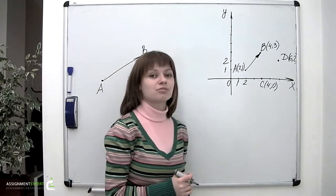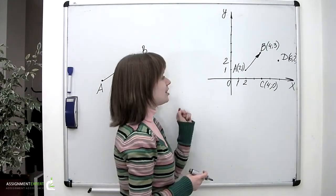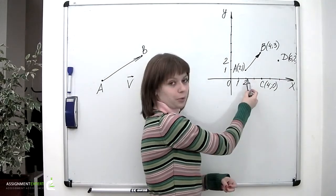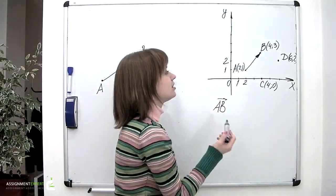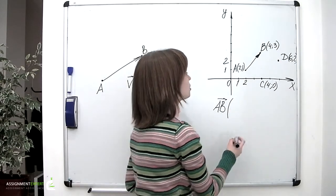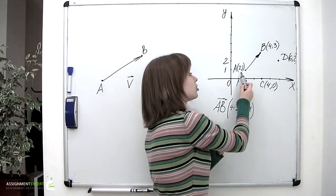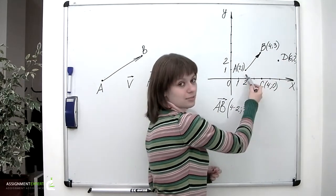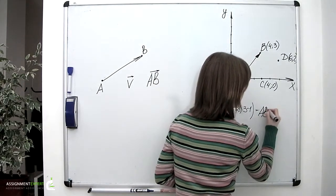It turned out that it's very convenient to represent vectors by pairs of numbers, which are called the coordinates of the vector. Each coordinate of the vector is the difference of the corresponding coordinates of the terminal point and its initial point. So if we wanted to calculate the coordinates for vector AB, we subtract the x-coordinate of the initial point from the x-coordinate of the terminal point, and the same goes for the y-coordinate. So we get 4−2 and 3−1, giving coordinates 2 and 2.